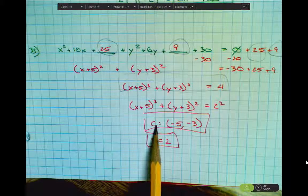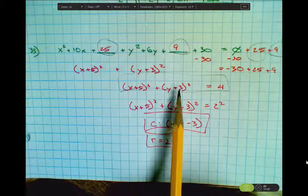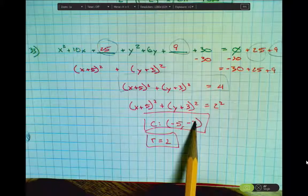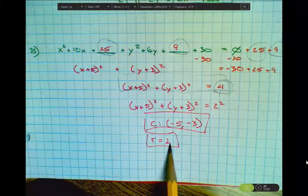When you find the center, the center is the opposite of what you see. So if we see positive 5, we're going to record negative 5. Positive 3, record negative 3. And again, this represents the radius squared. So if r squared is 4, then the radius then would be 2.